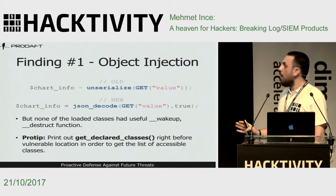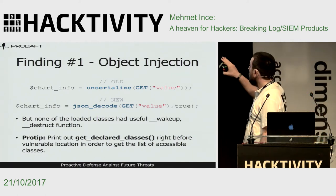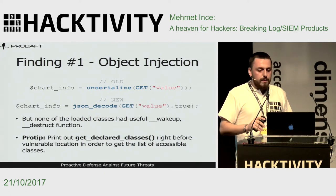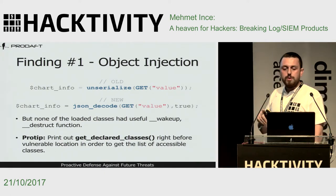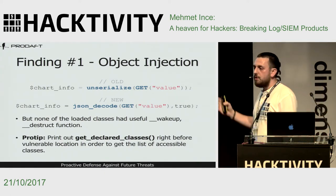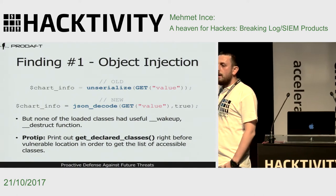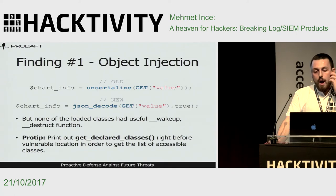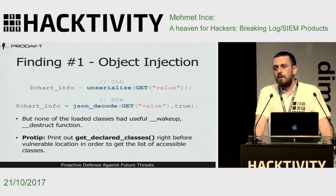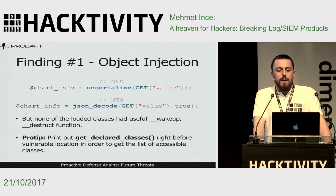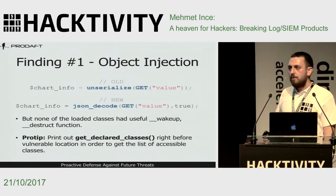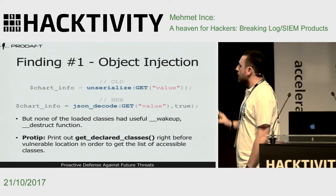By reading the differences, this was the first vulnerability we found. The older version was using the unserialize function, and the newer version was using JSON decode. This is an obvious PHP object injection vulnerability. However, as you know, PHP object injection depends on classes that have wakeup and destruct functions, and we hadn't seen any such classes, so we noted this vulnerability and kept reading the source code.